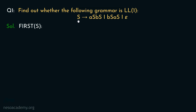The non-terminal S is involved in 3 different production rules. For the first production rule, the terminal symbol small a is the first terminal which will be produced, so we include small a in FIRST(S). For the second production rule, the terminal symbol B is the first terminal derived, so we include B in FIRST(S). For the third rule, S can be rewritten as epsilon, so epsilon is also included in FIRST(S).